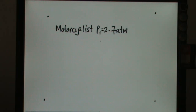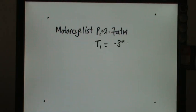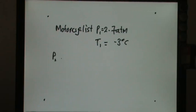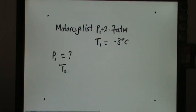During winter, the temperature was negative 3 Celsius. So for P2, what is the air pressure when the temperature is 27? This is the new pressure when the temperature is 27.